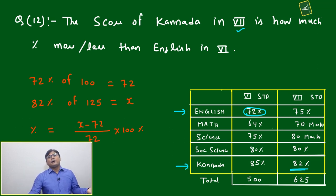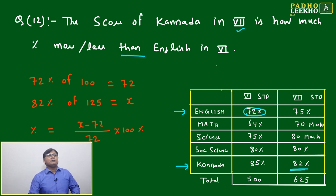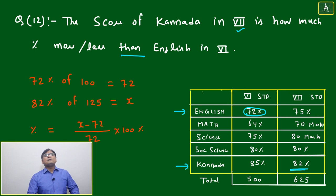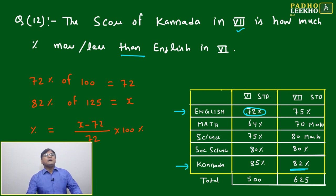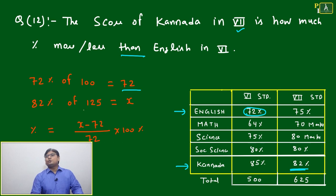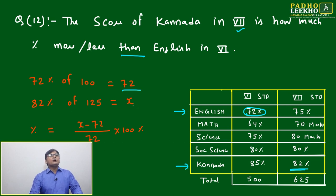Since we need the base of sixth, we take the base as 72 — that is, 72 percent of 100, which is simply 72. Now for the seventh, we have 82 percent of 125, and we need to figure out how much that will be.